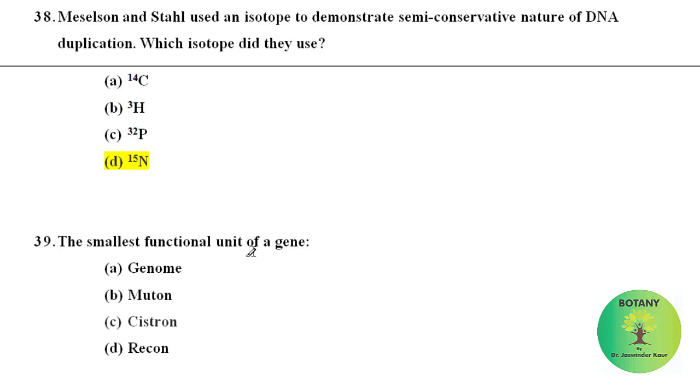The smallest functional unit of a gene is the cistron.